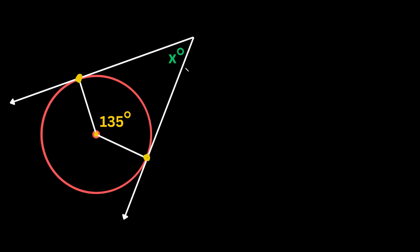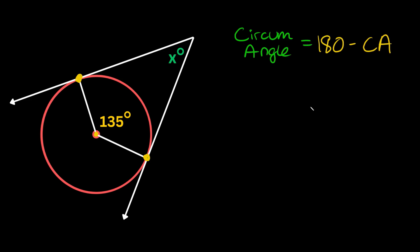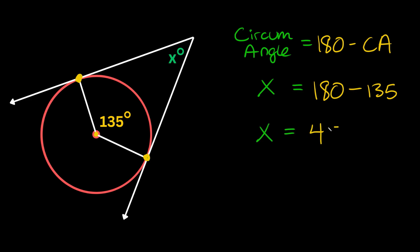When this circumscribed angle and this central angle hit the circle at the exact same two spots, that creates a relationship we can use to find a missing circumscribed angle. The formula is: the circumscribed angle is equal to 180 minus the central angle. So x is equal to 180 minus 135, which gives us x equal to 45 degrees.